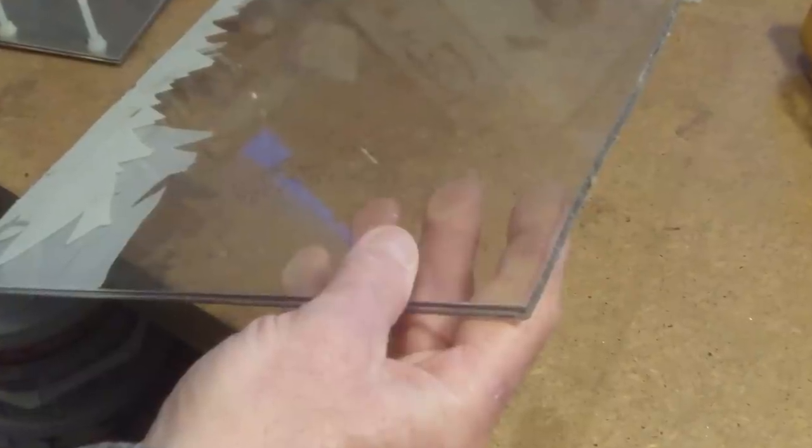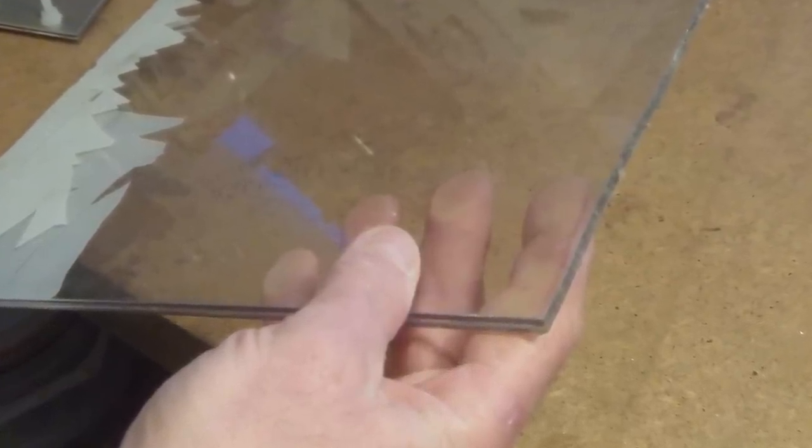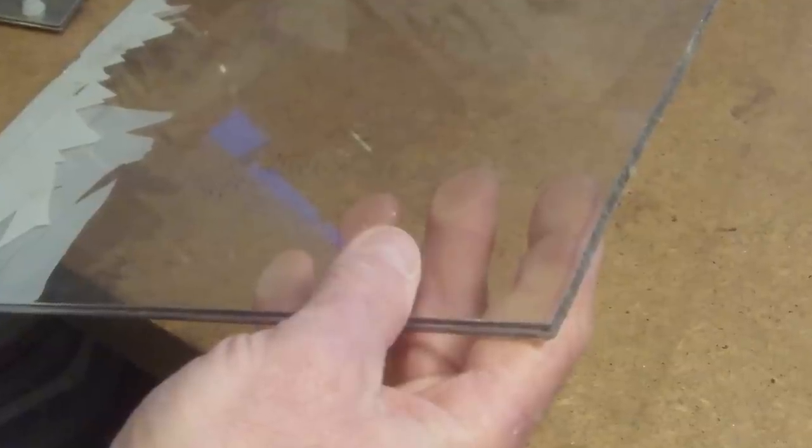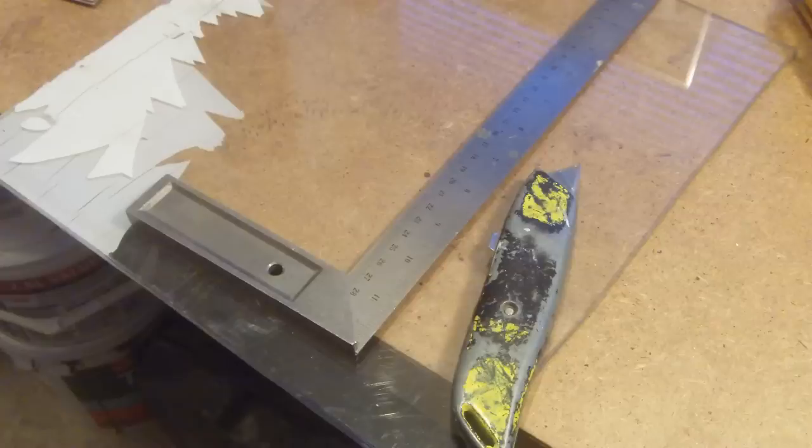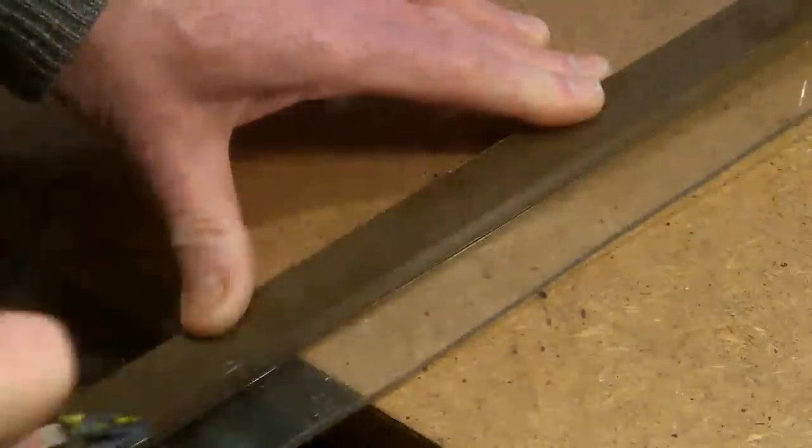I found a sheet of perspex in my junk box and I thought rather than saw this to cut it off I'd mark it with a Stanley knife and cut right into it and then snap it off. But it shattered all over the place.